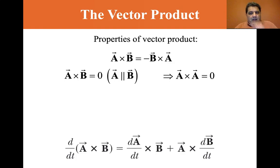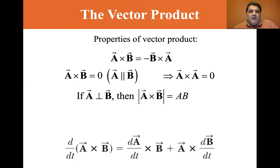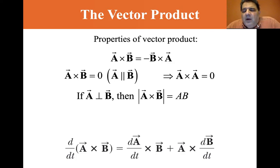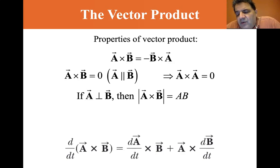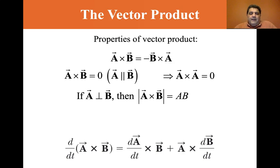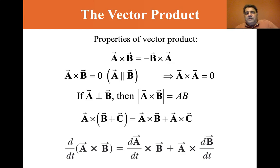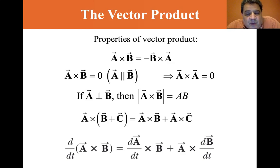So A cross A equals zero because the angle between them is zero, and sine of zero equals zero. If A is perpendicular to B, sine of 90 degrees equals one, so the magnitude of A cross B equals just AB — because AB sin 90 equals AB. The cross product is also distributive: A cross (B + C) equals A cross B plus A cross C. And the derivative: d/dt of (A cross B) equals (dA/dt) cross B plus A cross (dB/dt).